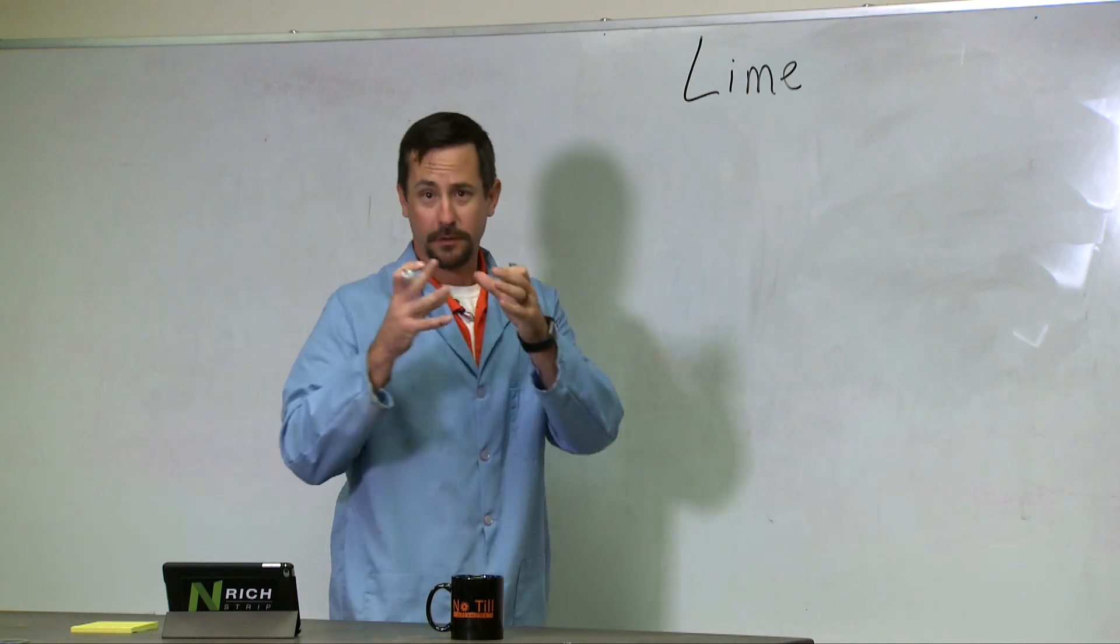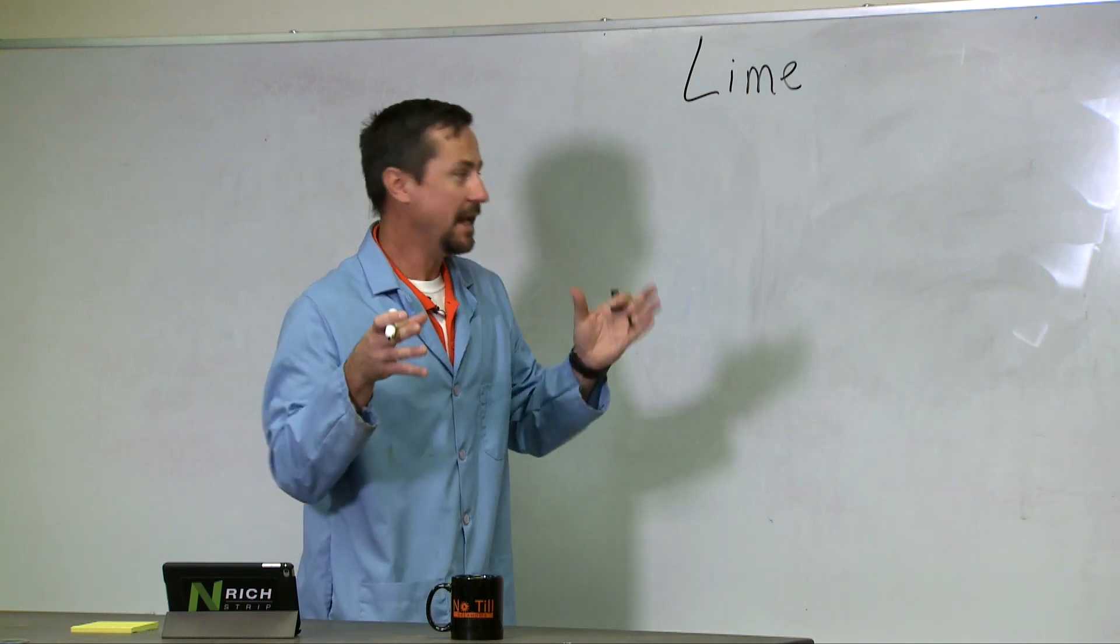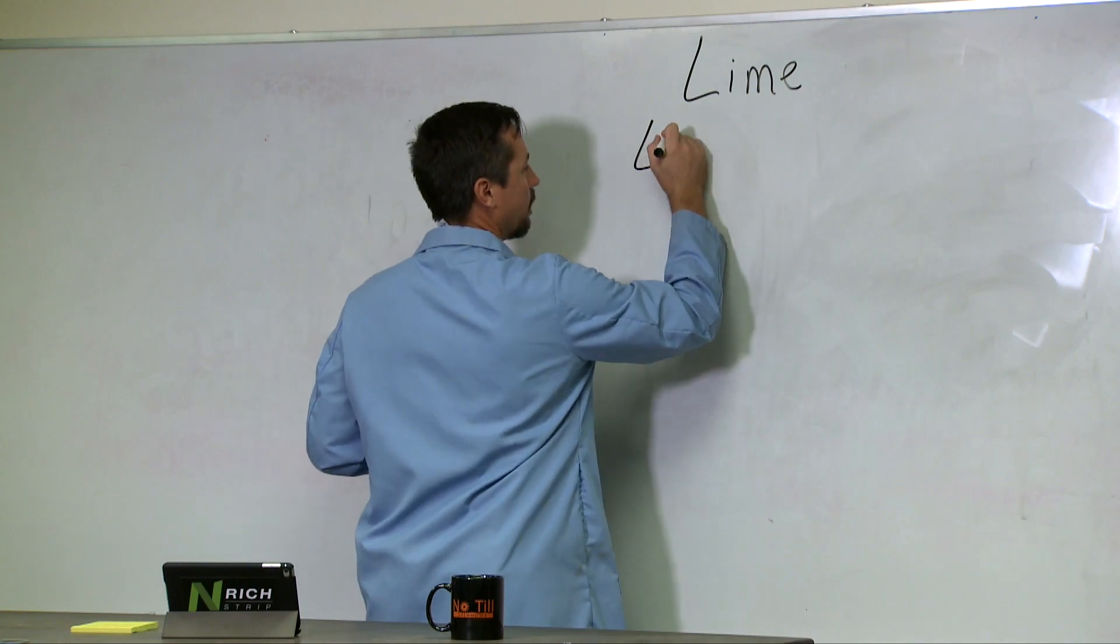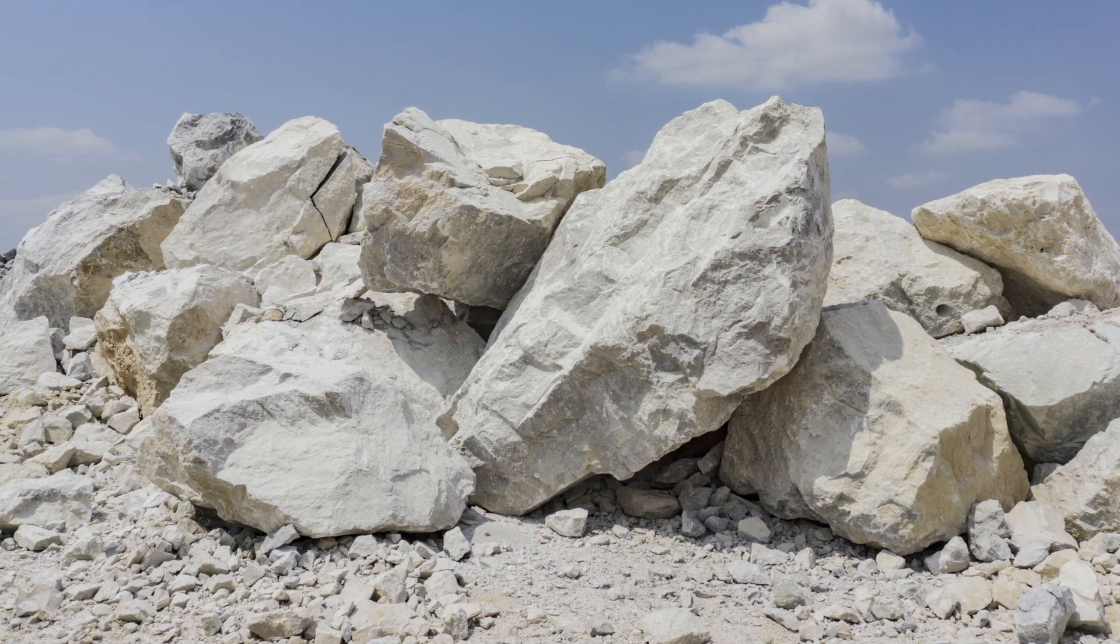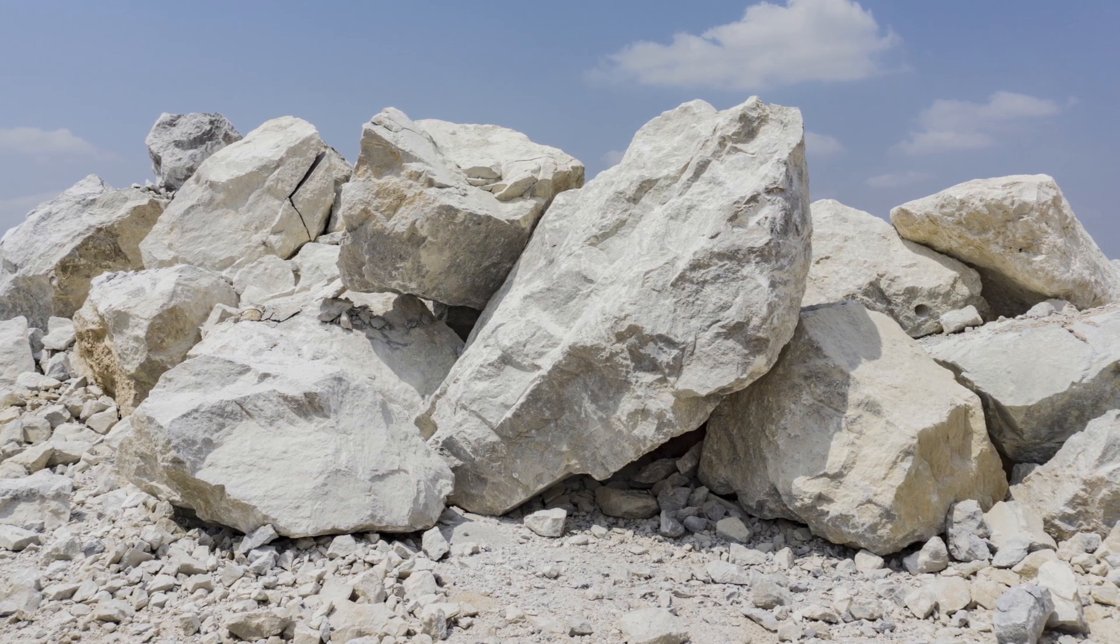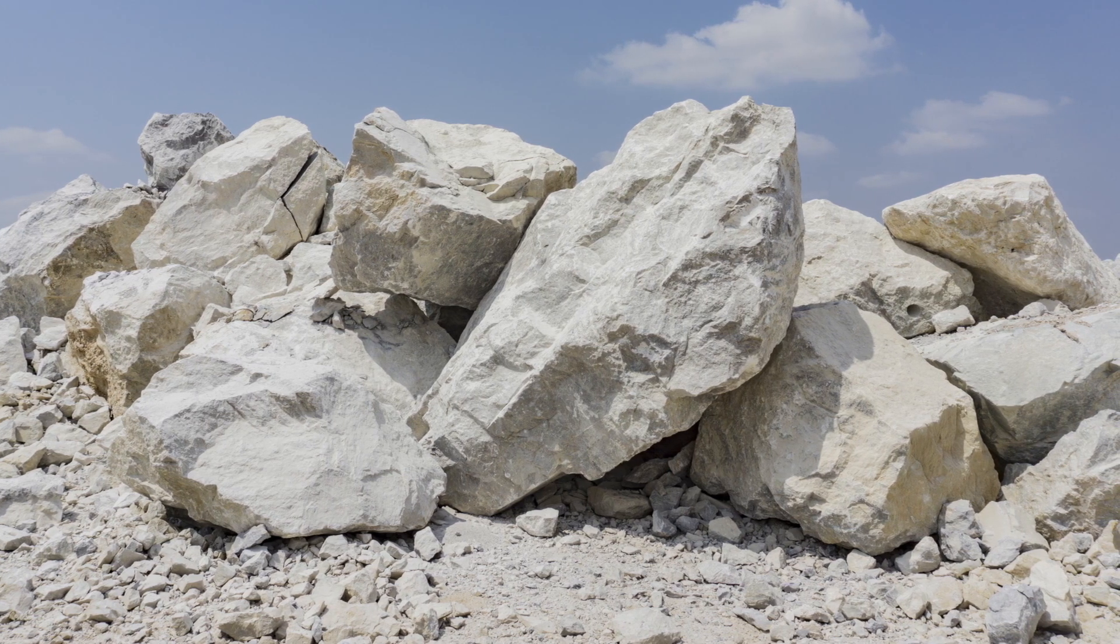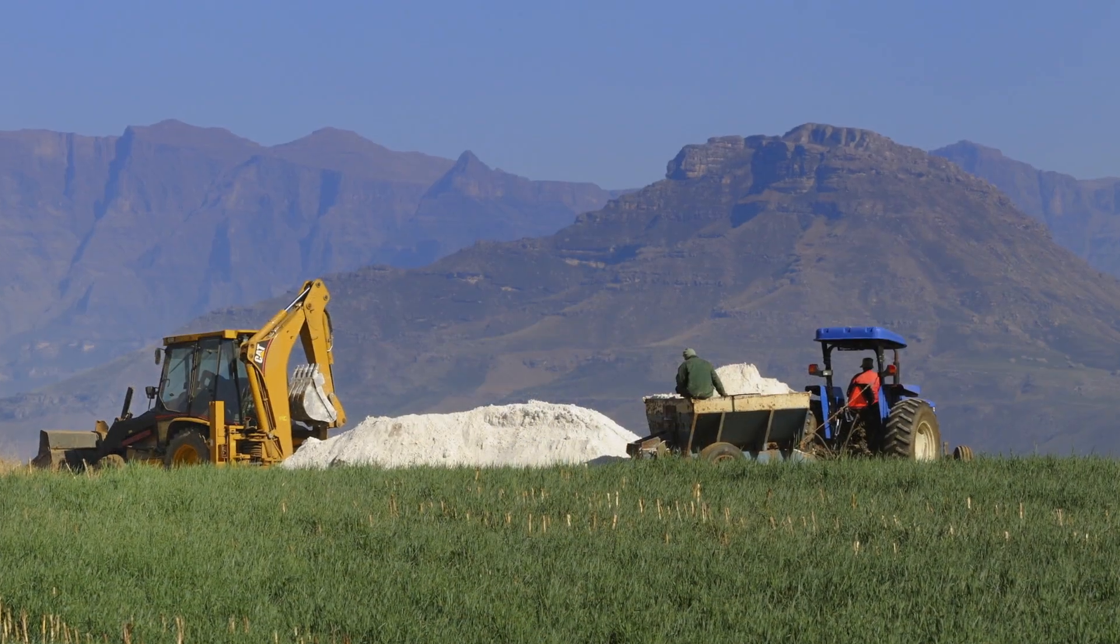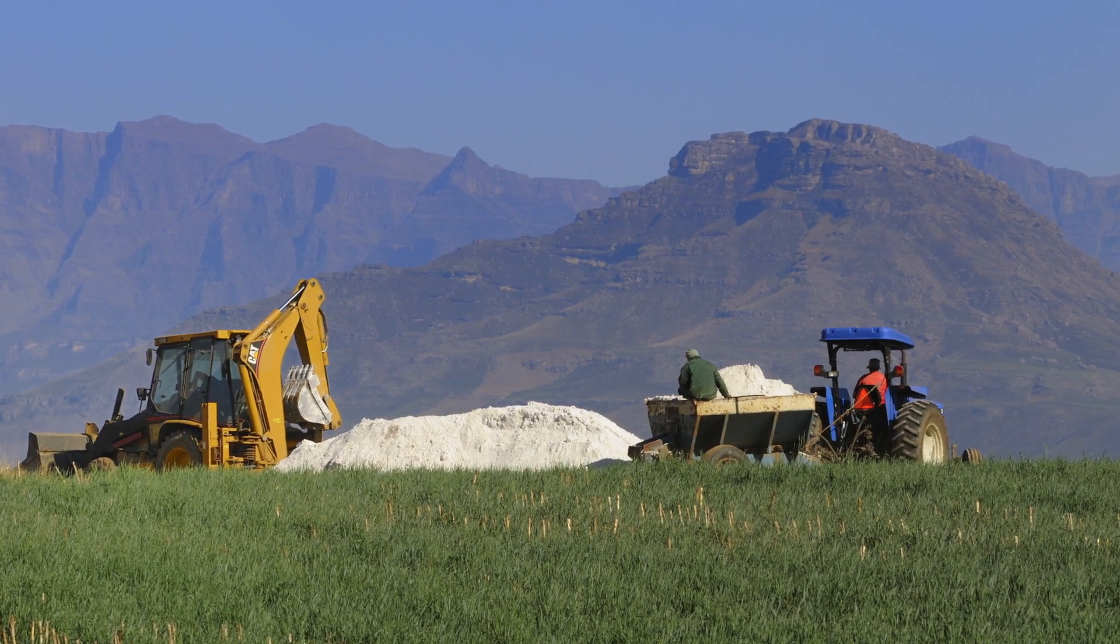Ag lime starts out as a rock form - limestone. We're taking those big chunks of rock that are dug out of the ground, the same rock that's put on dirt roads and in parking lots, and grinding it down to a very fine powder.